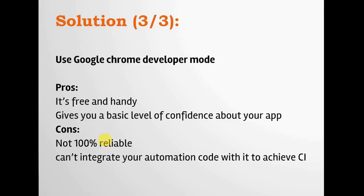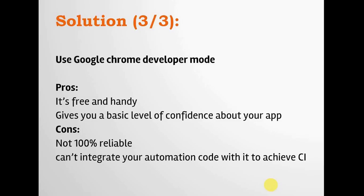Solution three is to use Google Chrome Developer Tools, which is the most economical and handy option, giving you a basic level of confidence about your application's responsiveness on different screen sizes. It's primarily intended for developers to check responsiveness while coding, but testers can also use it. The pros are that it's free and handy. The cons are that it's not 100% reliable — you should double-check on at least one or two real devices — and you cannot integrate your automation code with it for continuous integration. However, for individuals or small teams with tight budgets, it is a viable option.